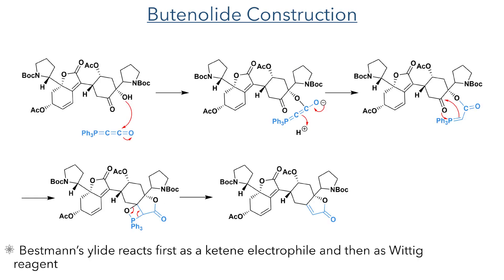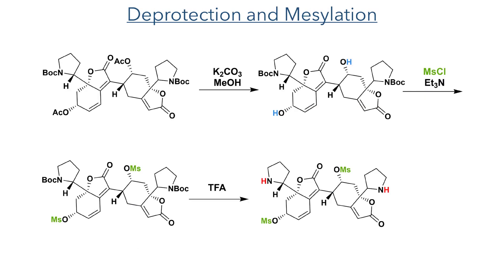To construct the second butenolide ring, the authors utilised Bestmann's ylide. This unusual reagent reacts first as a ketene electrophile, which forms an ester upon reaction with the tertiary alcohol nucleophile. The phosphonium moiety then acts as a Wittig reagent and forms an oxaphosphetane ring with the carbonyl group. Elimination of triphenylphosphine oxide generates the target butenolide in one step from the alpha-hydroxy ketone.